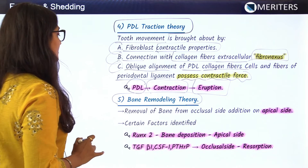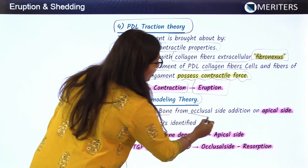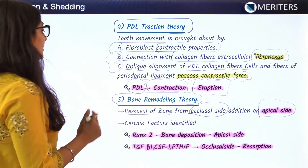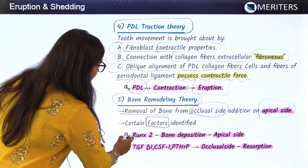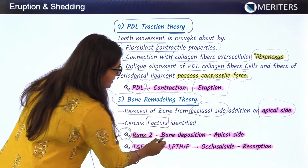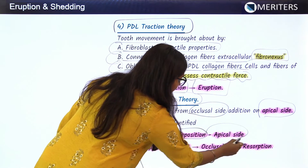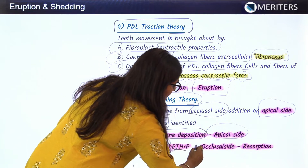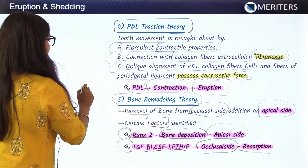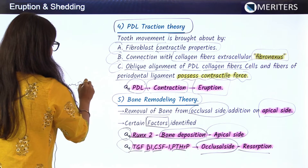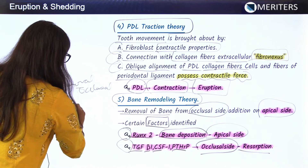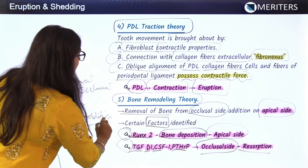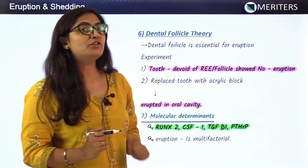The bone remodeling theory states that removal of bone from the occlusal side and addition on the apical side leads to the vertical movement of the tooth. Important factors: RANKL2 causes bone deposition on the apical side, while factors like transforming growth factor beta-1 (TGF-β1), CSF-1, and PTHrP1 cause resorption on the occlusal side. So on one side there is removal at the occlusal surface and on the apical side there is deposition, causing the tooth to move vertically.